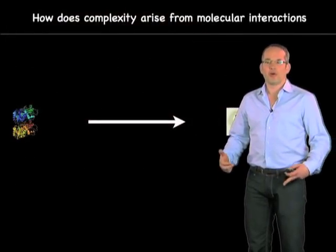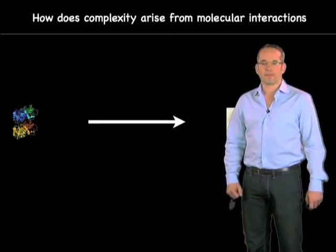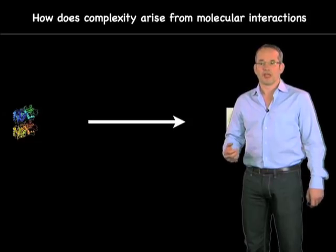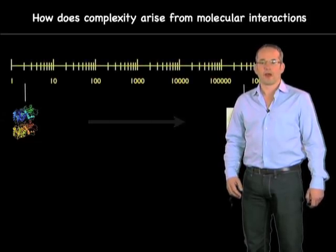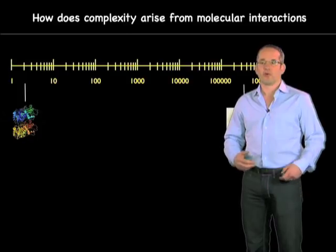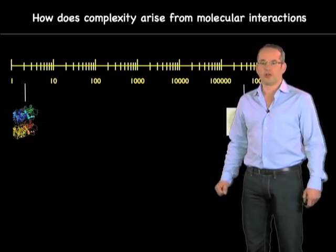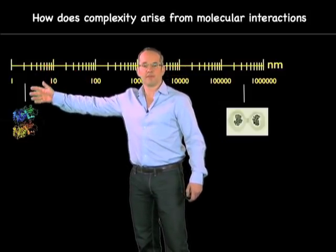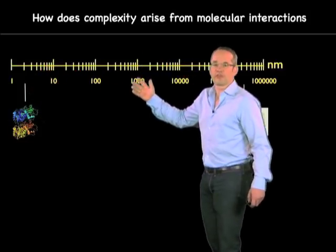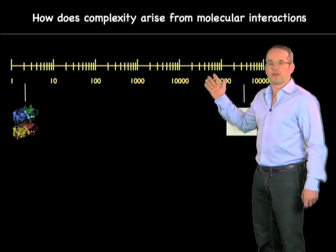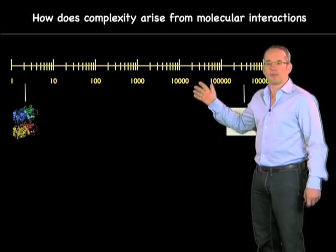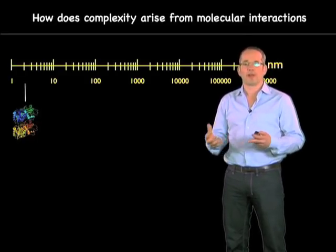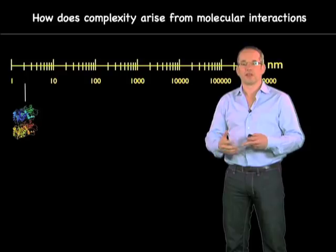One of the key questions in biology that we're all interested in is: how does complexity arise from molecular interactions? The things we're interested in, such as cells, are often five or six orders of magnitude bigger than the molecules that make them up. So, what are the rules by which these molecules can interact to create these very complex structures, which are so much bigger than they are themselves?